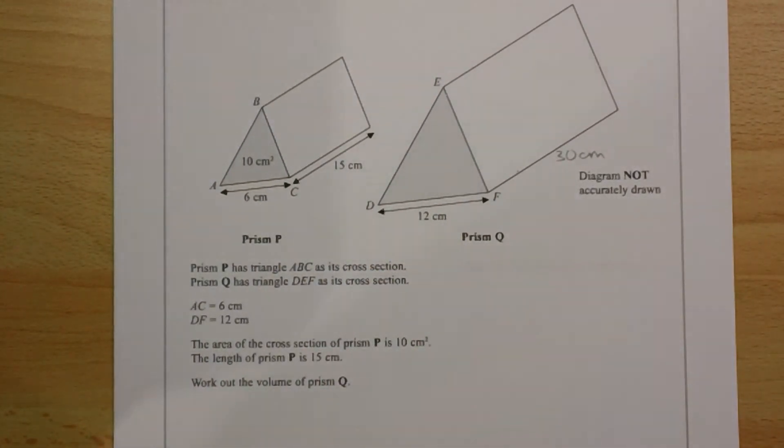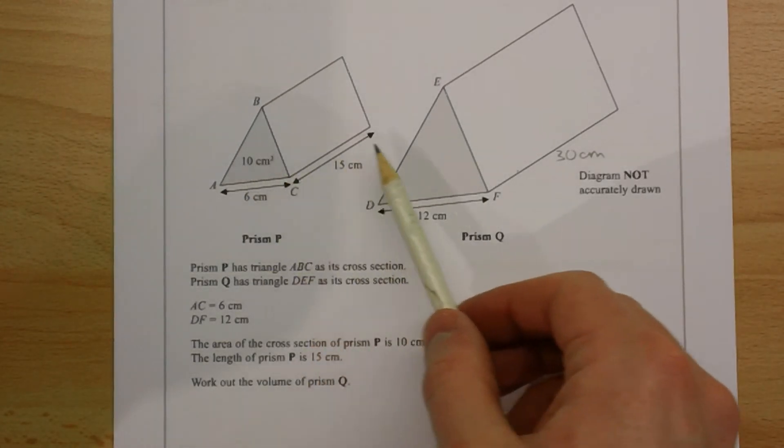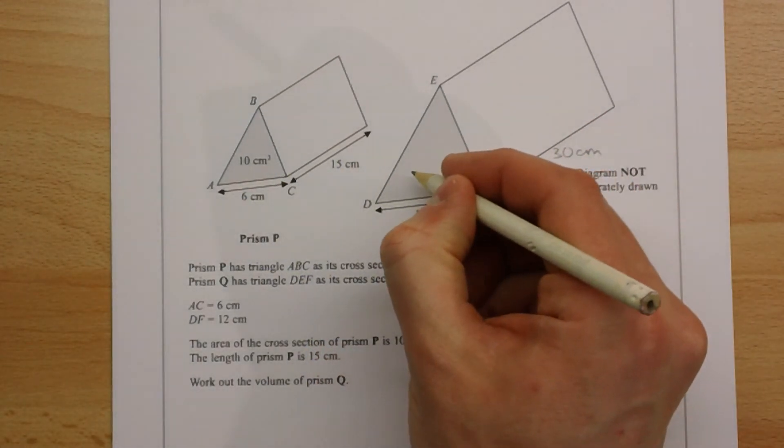These lengths are twice as long in prism Q. This area is going to be 4 times as big.